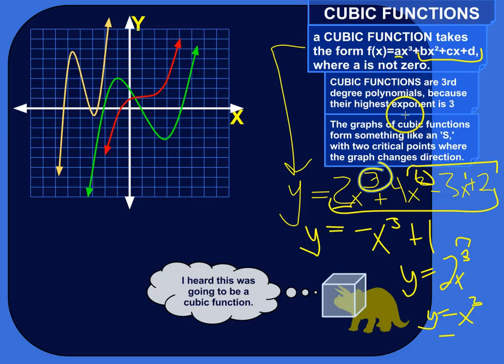And so we call them 3rd degree polynomials, these cubic functions, because their highest exponent is 3. And what that will do is it'll make a graph with this sort of shape where it's kind of an S shape.